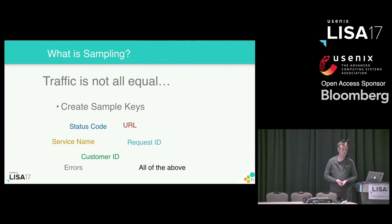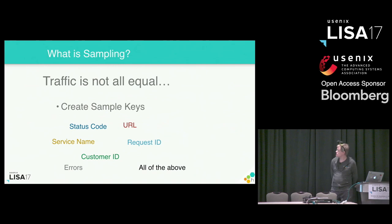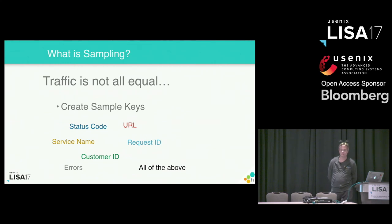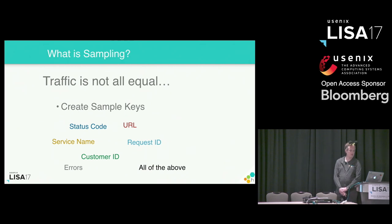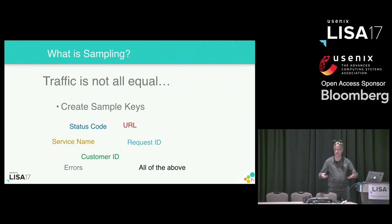What you use to make this selection is dependent upon the goals of the service you're running. For a web server, a status code is certainly useful. Perhaps there are some endpoints in your service that are more interesting than others. This is a good way of collecting for writes or reads, or individual customers that might be of particular interest. You can choose some or many of these together to influence whether or not you're going to sample that traffic.